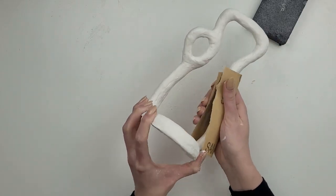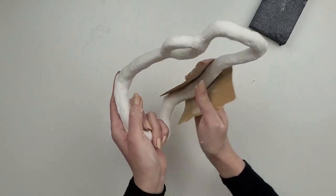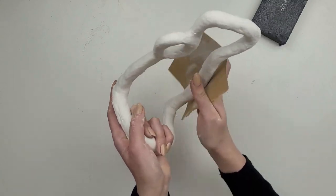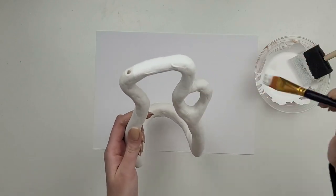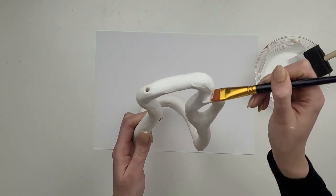Once it's dry I go around with sanding paper. I paint it in white and my abstract modern looking vase for one flower is ready.